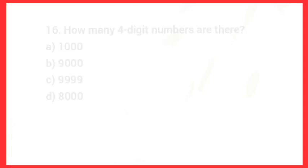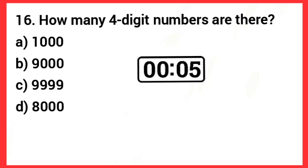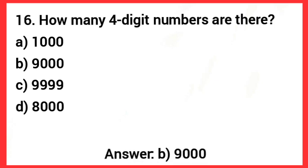Next one: How many four digit numbers are there? Answer: Option B — 9,000.